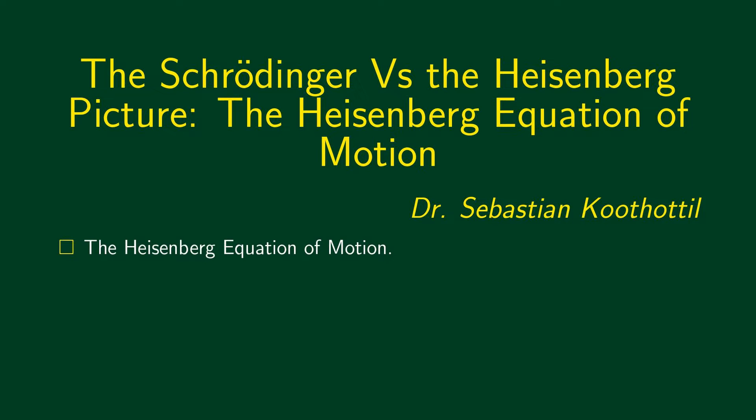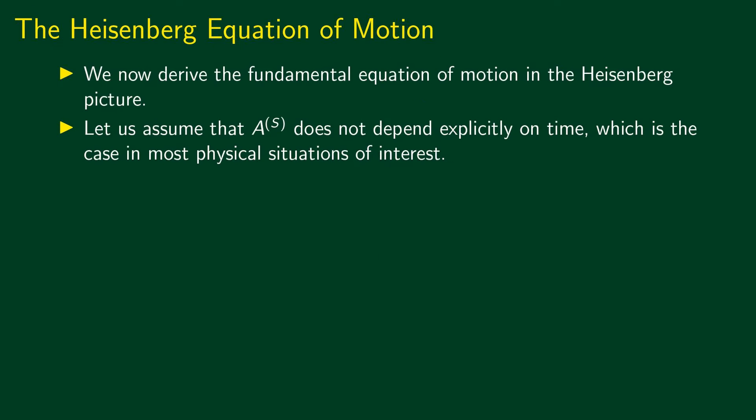In the last class, we discussed the Schrödinger and the Heisenberg pictures of time evolution. In this session, we shall move on to the Heisenberg equation of motion. To derive the Heisenberg equation of motion, we shall assume that the Schrödinger picture operator A_s has no explicit dependence on time.